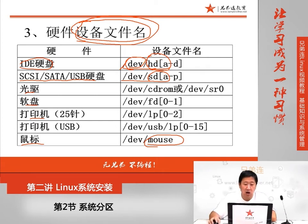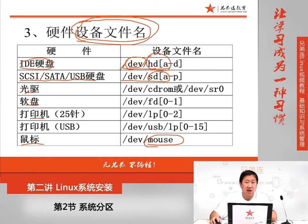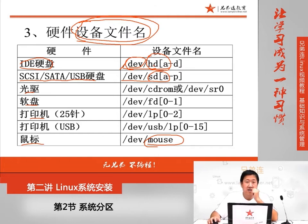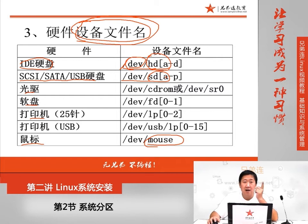我们要做的事情是能够看懂就可以了。比如说，hda代表IDE硬盘接口的第一个硬盘，hdb代表IDE硬盘接口的第二个硬盘，sda代表SCSI硬盘接口的第一个硬盘，依次类推，这就是硬件的设备文件名。